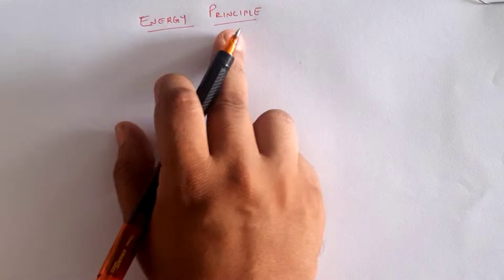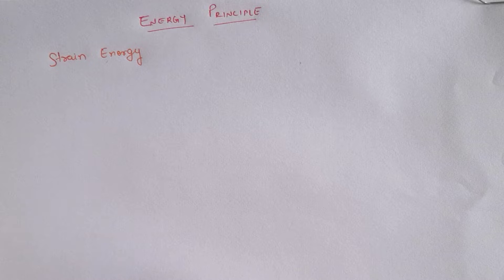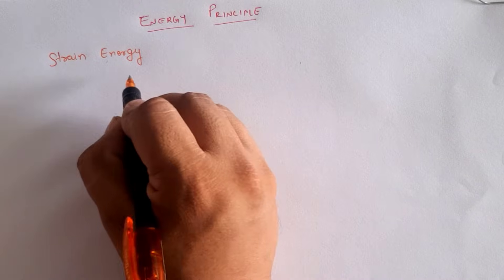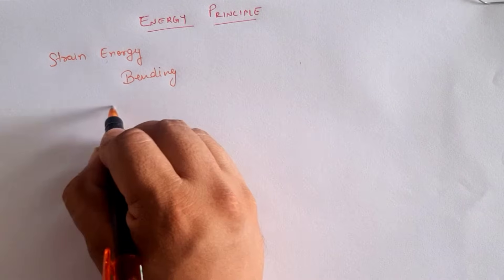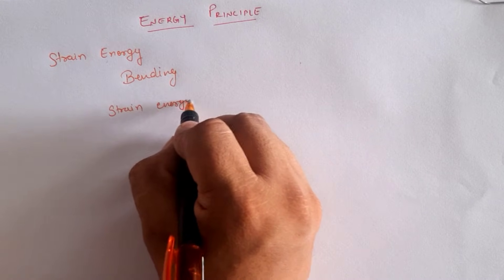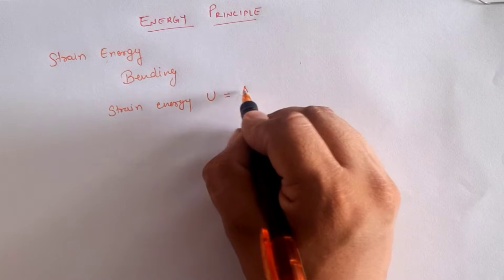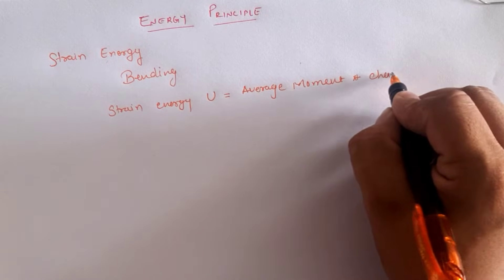The energy principle is based on strain energy. When an elastic body is subjected to an external load or moment within the elastic limit, it deforms, and due to the work done, energy is stored in the elastic body. If we focus on bending, the strain energy stored in the material is denoted by U and is mathematically written as average moment multiplied by change in slope.